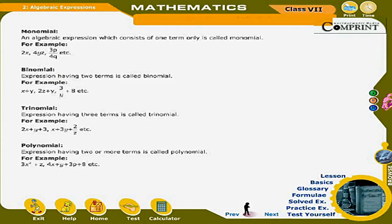Binomial: An expression having two terms is called a binomial. For example: x + y, 2z + y, 3/y + 8, etc. Trinomial: An expression having three terms is called a trinomial. For example: 2x + y + 3, x + 3y + 2/z, etc.